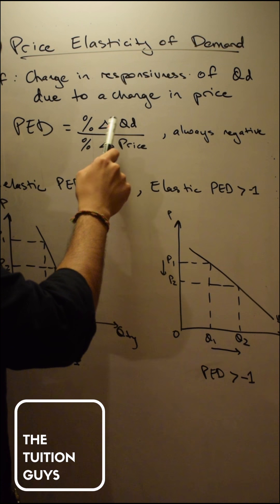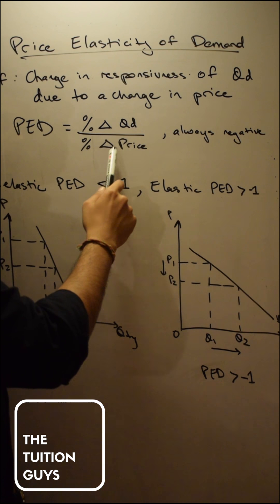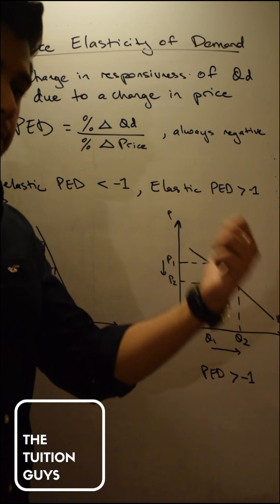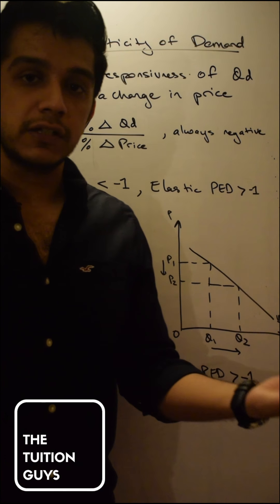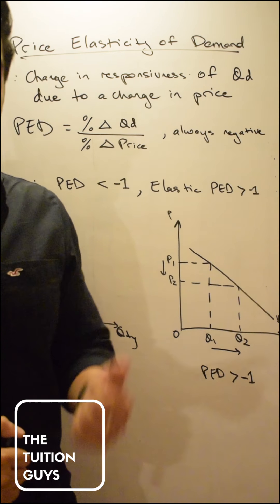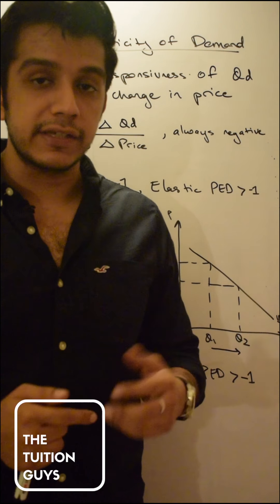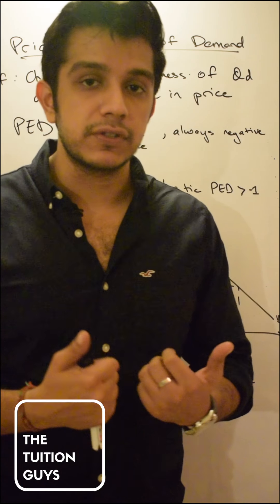So percentage change in quantity demanded divided by percentage change in price. Now flashback to the theory of demand lesson. What is the law of demand say? That as price goes up quantity demanded will go down. Why? Because there's an indirect relationship, an inverse relationship.